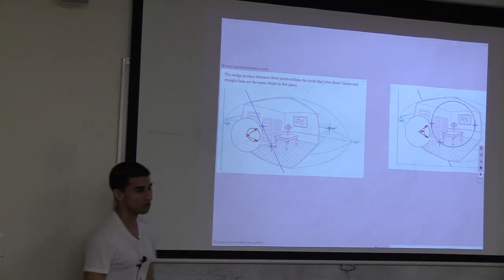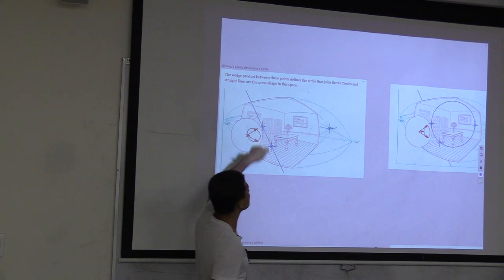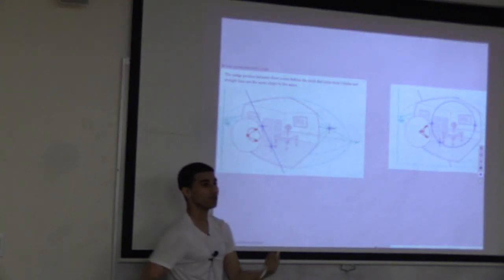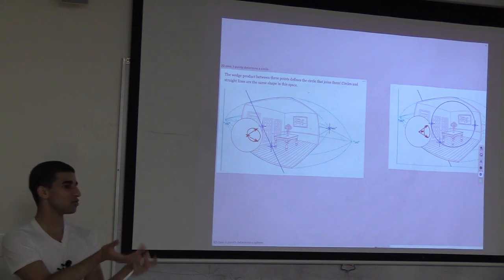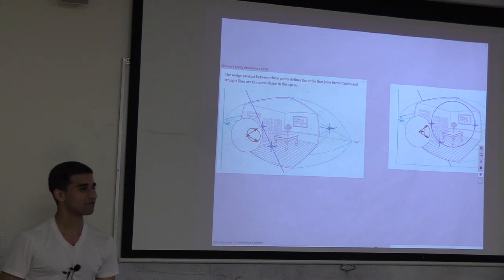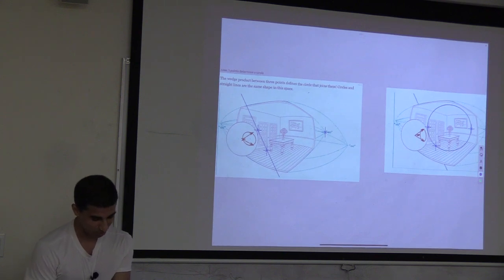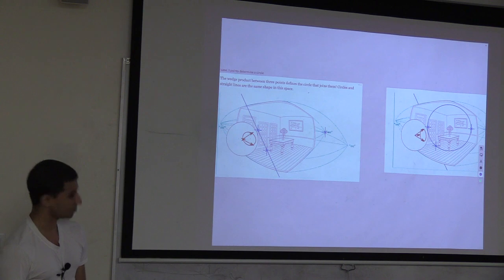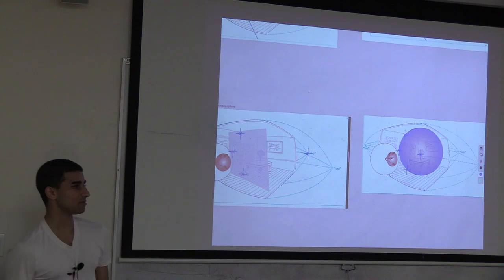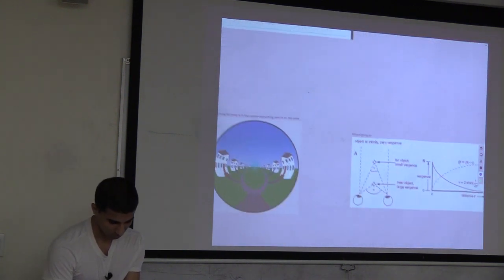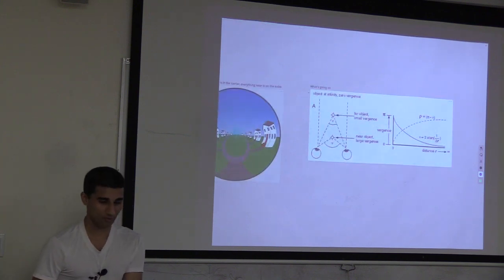Doing this conformally: add a point at infinity and a point infinitesimally close to zero, double-wrapping space as a sphere. This gives a way of representing a scene very faithfully by circles and sheets, corresponding to sampling around light cones.